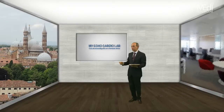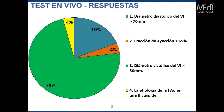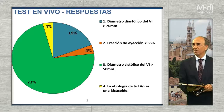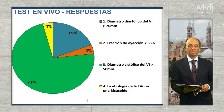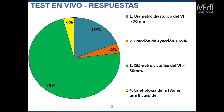Volvemos al estudio para conectarnos de nuevo con la doctora Volberg. Antes de contestar las preguntas vemos los resultados del test live. La mayoría de las respuestas fue el diámetro sistólico del ventrículo izquierdo mayor de 50 mm. Es correcto: es el dato más fidedigno para determinar que ese paciente está en riesgo y que hay que intervenir, especialmente teniendo en cuenta que es una valvulopatía con una historia natural generalmente muy larga.